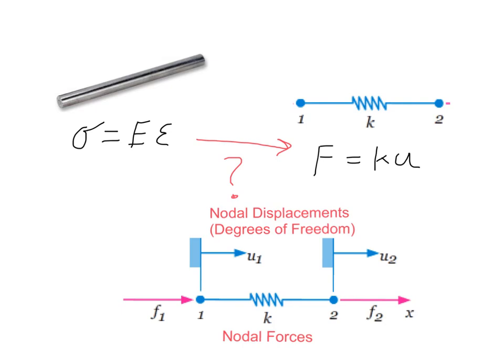Throw a little bit more terminology at you here. The u's are degrees of freedom, a general term. They are displacements at nodes or nodal displacements. But in general, they are called degrees of freedom.